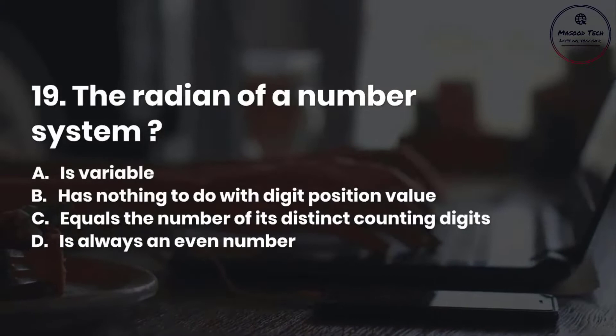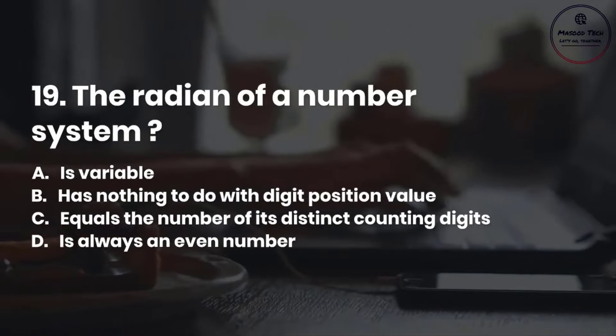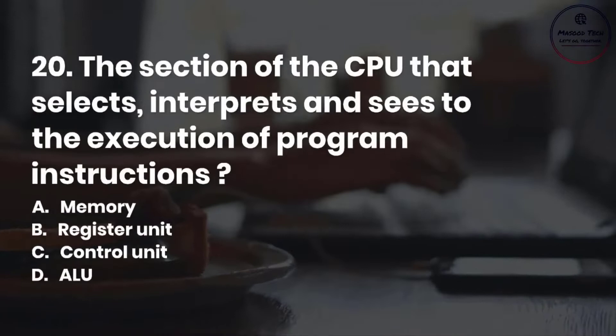Number 20. The section of the CPU that selects, interprets, and sees to the execution of program instructions: A. Memory. B. Register unit. C. Control unit. D. ALU. Correct answer is C.